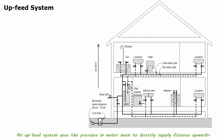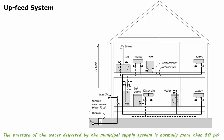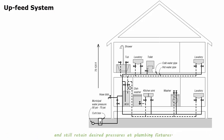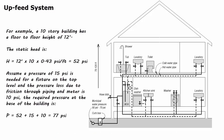An upfeed system uses the pressure in the water main to directly supply fixtures upwards. The pressure of the water delivered by the municipal supply system is normally more than 80 psi, which is large enough to raise water up to 8 to 10 stories and still retain desirable pressures at plumbing fixtures. For example, a 10-story building has a floor-to-floor height of 12 feet, and the static water head is 12 feet times 10 stories times 0.43 psi per foot.